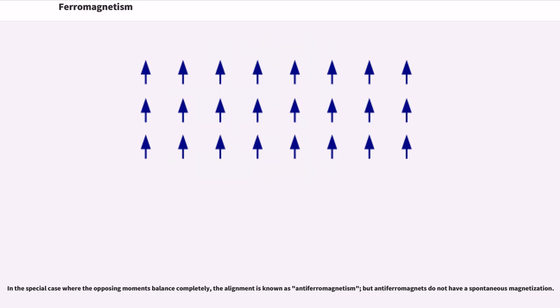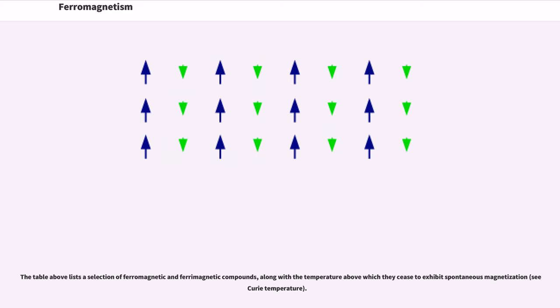In the special case where the opposing moments balance completely, the alignment is known as anti-ferromagnetism, but anti-ferromagnets do not have a spontaneous magnetization. The table above lists a selection of ferromagnetic and ferrimagnetic compounds, along with the temperature above which they cease to exhibit spontaneous magnetization, see Curie temperature.